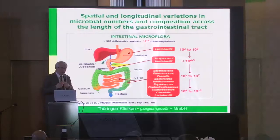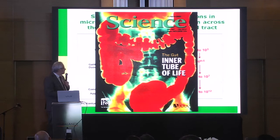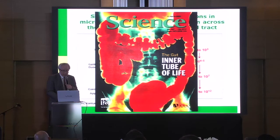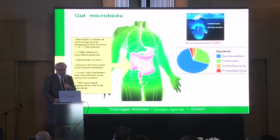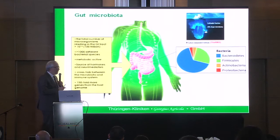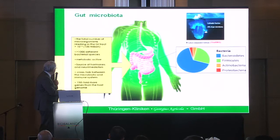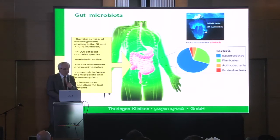Of course, if we look at microbiota in the stool, it's not the whole truth of what happens in the gut. But we can say for sure that the gut is the inner tube of life. If you look at the significance of gut microbiota: first, you have a huge number of cells, more than 1,000 different bacterial species, a very high metabolic activity, and what is very important is a cross-talk between bacteria and the immune system, the neurologic system, and other systems. We have 150-fold more genes than in the host genome.